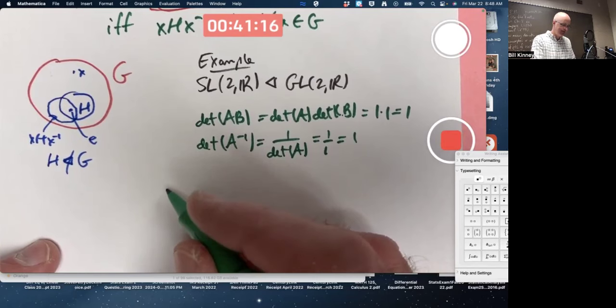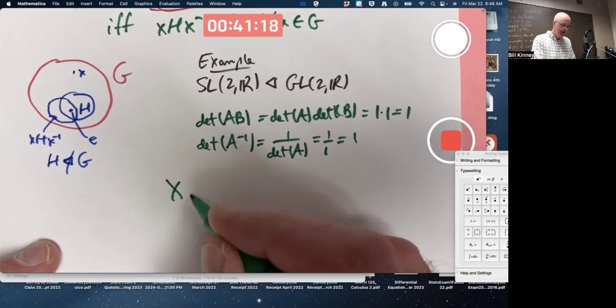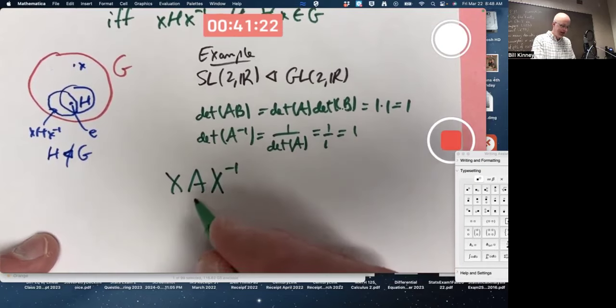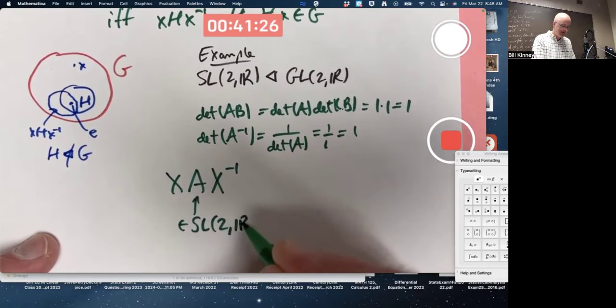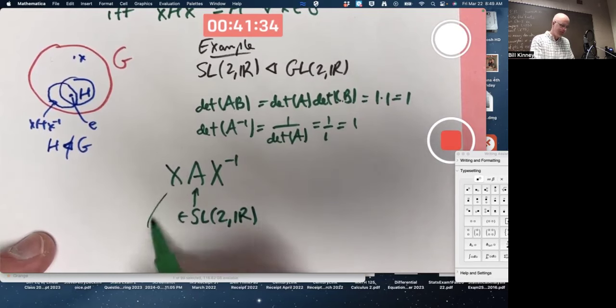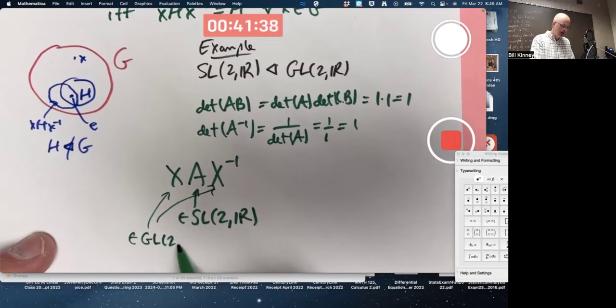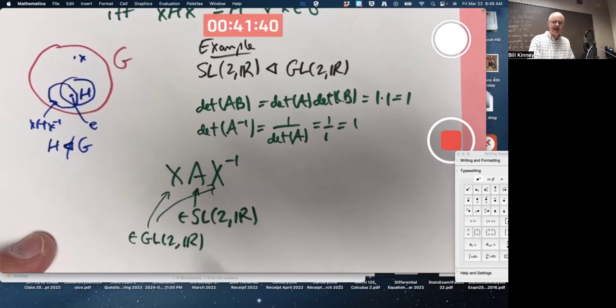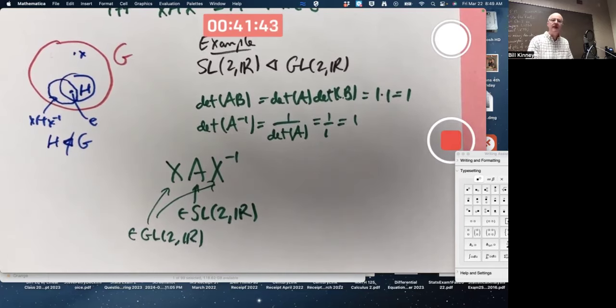I'll use a capital X. Give me an arbitrary A in SL(2,R). Special linear group of two by two matrices with real entries. Where X is not necessarily in SL(2,R). Those things are in GL(2,R), but not necessarily in SL(2,R). I mean, they could be, but they don't have to be.